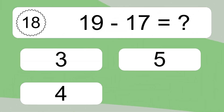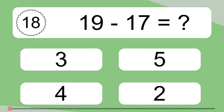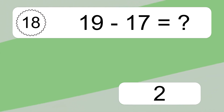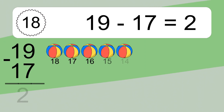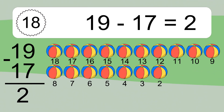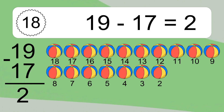19 minus 17 equals what? 19 minus 17 equals 2. Let's count it. 18, 17.